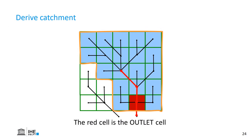Here we define the red cell as the outlet, and the algorithm can then define the catchment based on the flow direction and the stream link. The blue area is the catchment area, orange is the drainage divide, and all the water that falls within that area drains towards the outlet at the red cell.